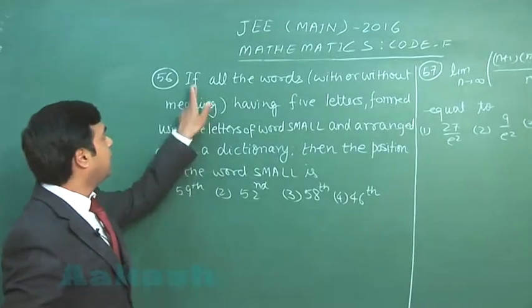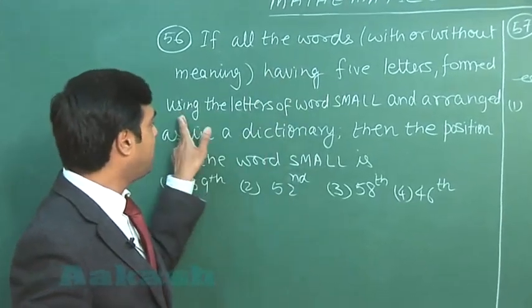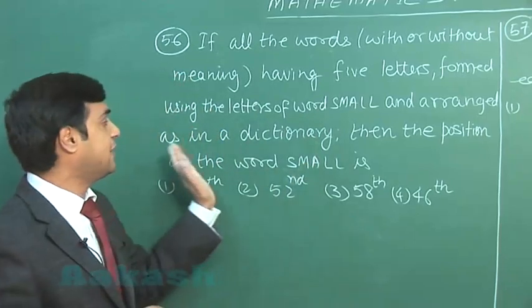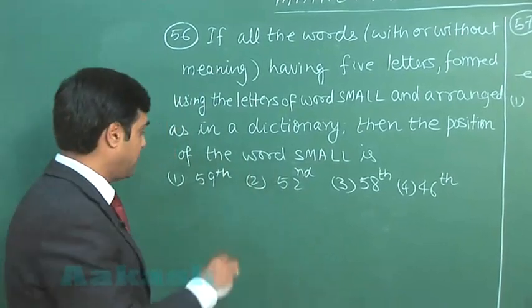Let us go for the next one. If all the words having five letters formed using the letters of the word SMALL and arranged as in a dictionary, then the position of the word SMALL is. So let us start this one.